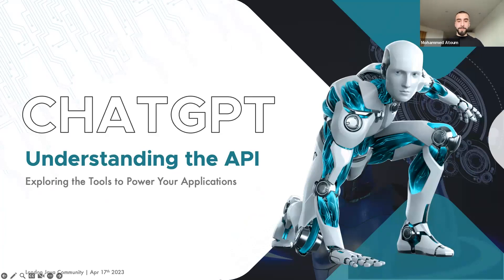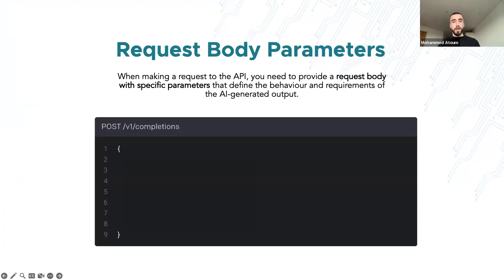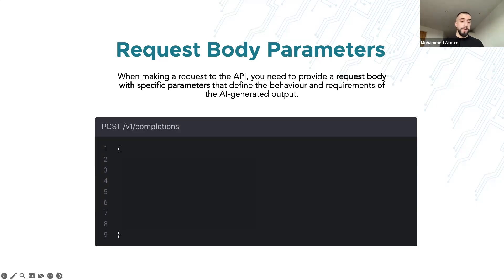Now that you understand the different GPT models, let's explore the OpenAI API. The API provides an interface to interact with GPT models. When making a request, you need to provide a request body with specific parameters that define the behavior and requirements of the AI-generated output.